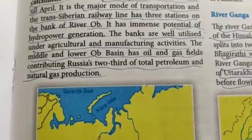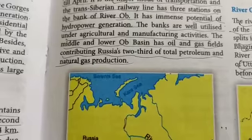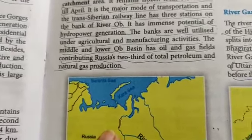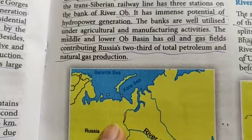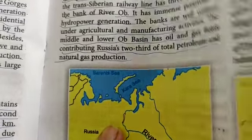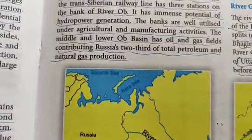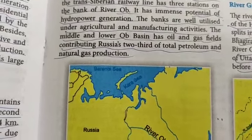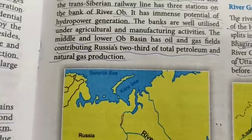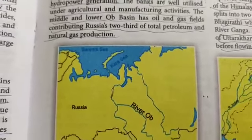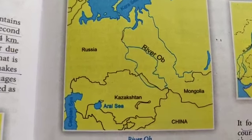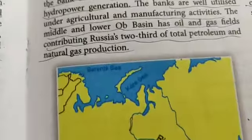River Ob has immense potential for hydropower generation. All rivers flow from a higher gradient to a lower gradient. The banks are well utilized for agricultural and manufacturing activities. The middle and lower Ob basin has oil and gas fields, contributing two-thirds of Russia's total petroleum and natural gas production. That is the importance of River Ob.